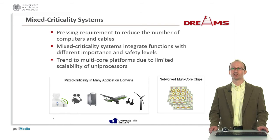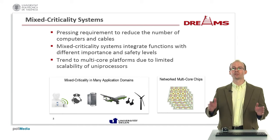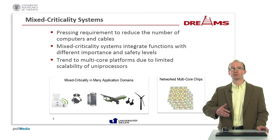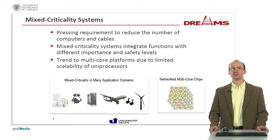Consider, for example, an avionics system — an airplane — where you have a broad spectrum of electronic functions, which range from comfort functions and entertainment functions in the cabin, up to safety-critical flight control functions, in which case the lives of the people on the airplane depend on the correct functionality.